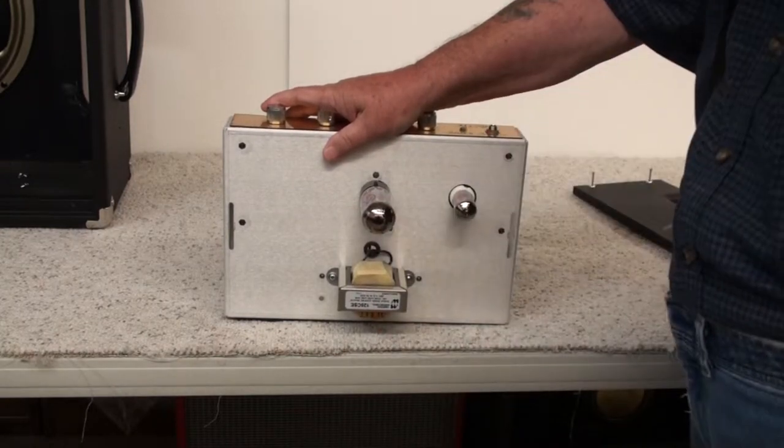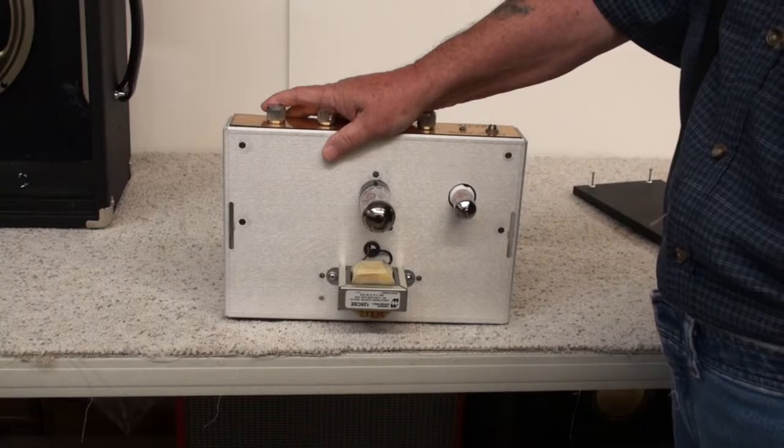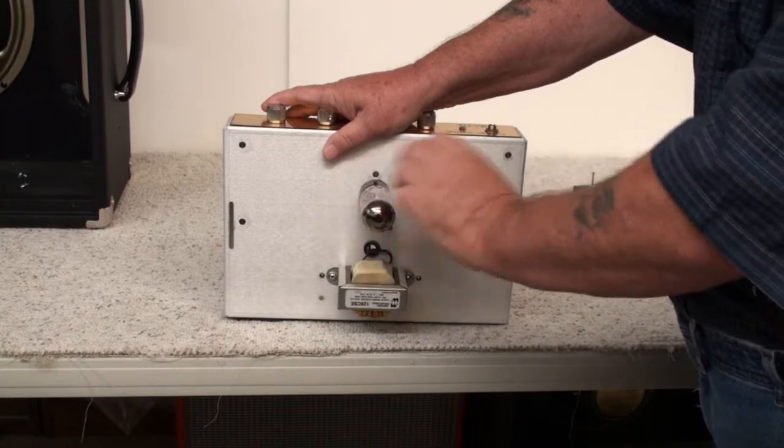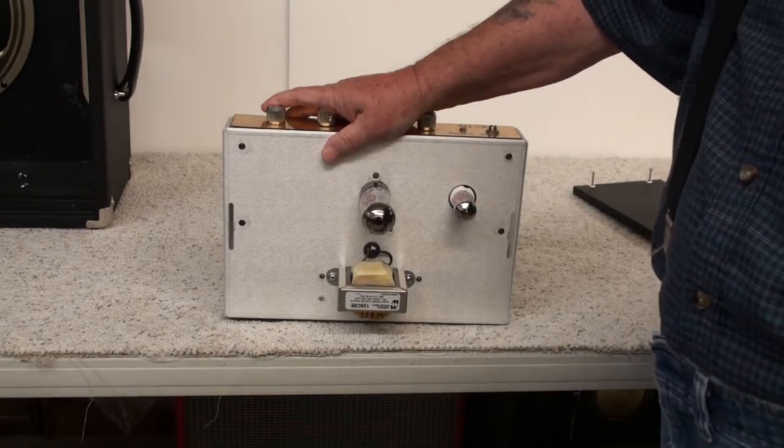And now you've got the tubes in their sockets. They're firmly in place. And for the purists out there, what you want to do after this is get a rag with some Windex on there and clean off the glass. Get your fingerprints and oil off of both tubes. And that will give you a bit longer life out of the tubes.